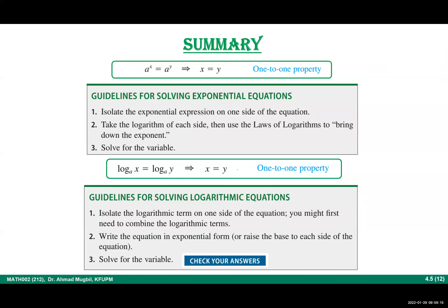To summarize: our main tool to solve exponential and logarithmic equations is the one-to-one property. Isolate the exponential or logarithmic term on one side. For exponential equations, raise the base to both sides and solve. For logarithmic equations, you must check your answers — don't forget that. For exponential equations, checking is not required unless you squared both sides or have an absolute value.